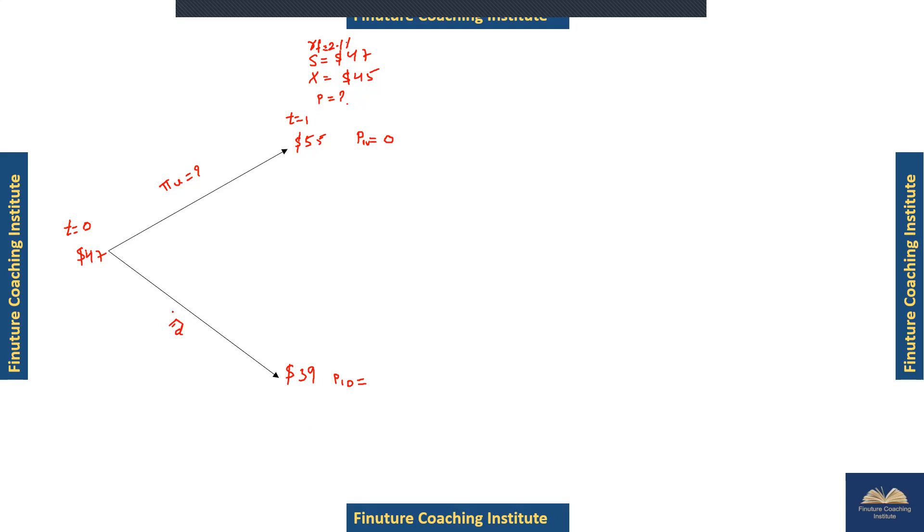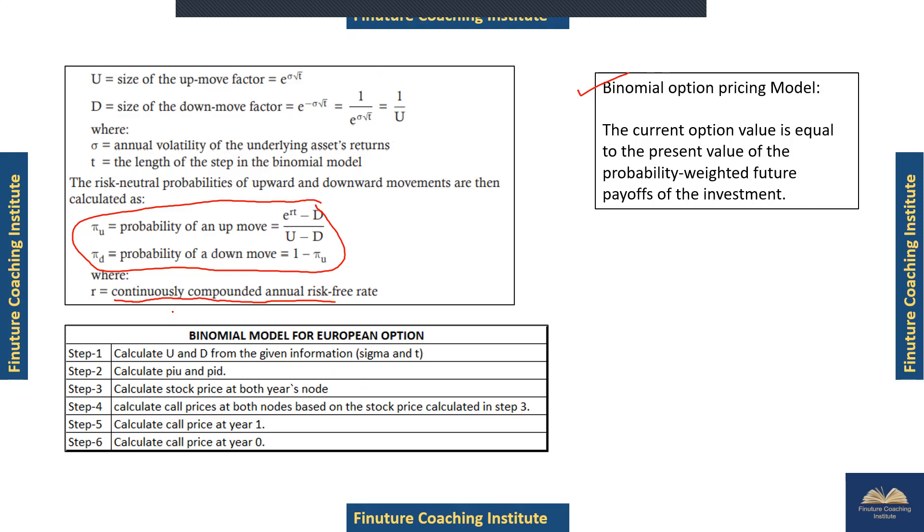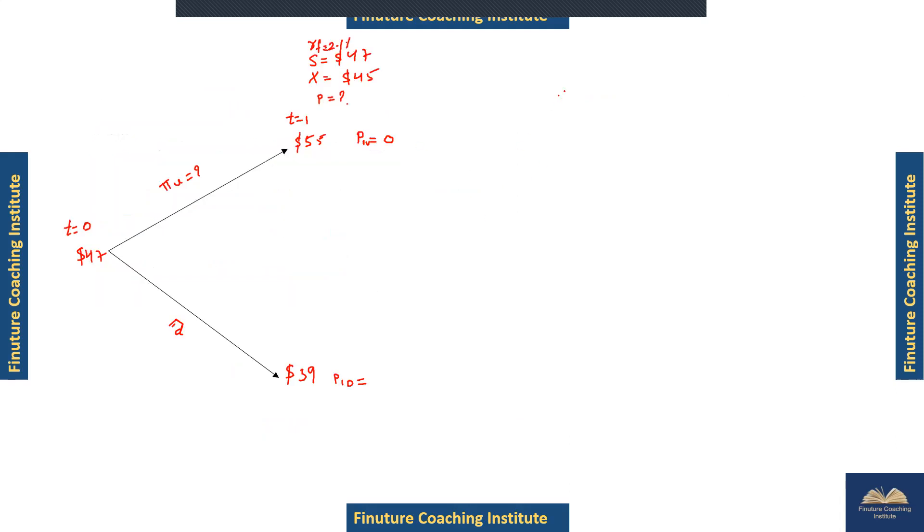Let's find the probability of up move. The formula is: probability of up equals e to the power rt minus d, divided by u minus d. One minus probability of up will give us the probability of down.